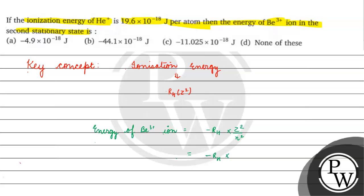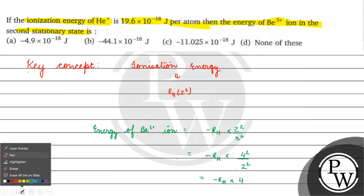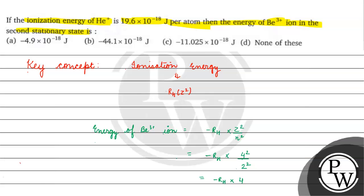Beryllium ke liye jo Z ki value hojaegi humare pas — hojaati hai 4, so 4 square. n square kya hojaega — second stationary state bola hai is liye n=2, so 2 ka square hojaega. Humare pas aajega minus rH into 16 by 4, yaani 4.